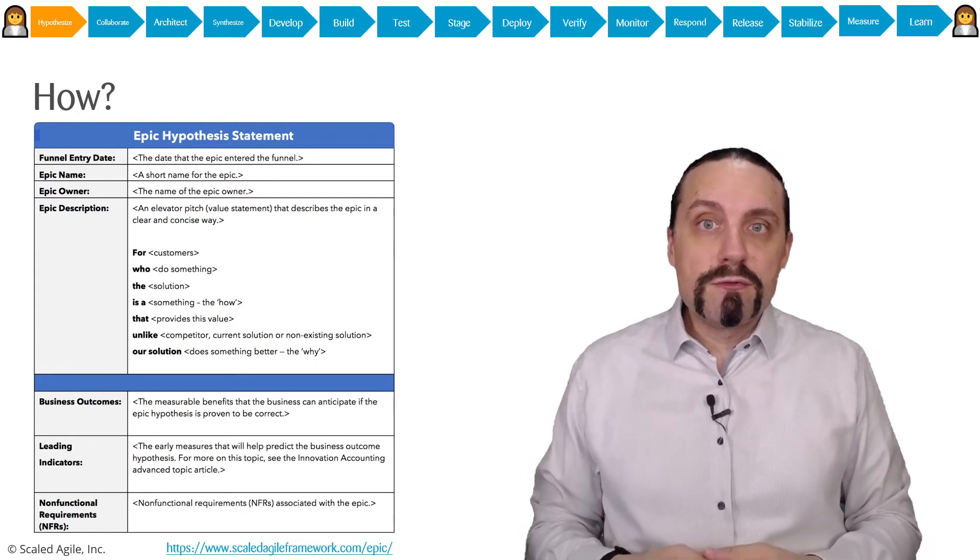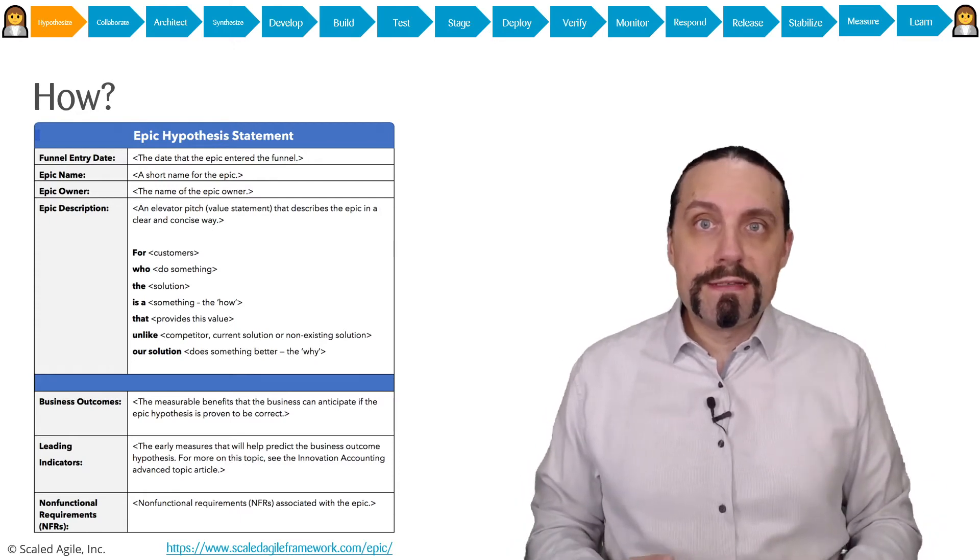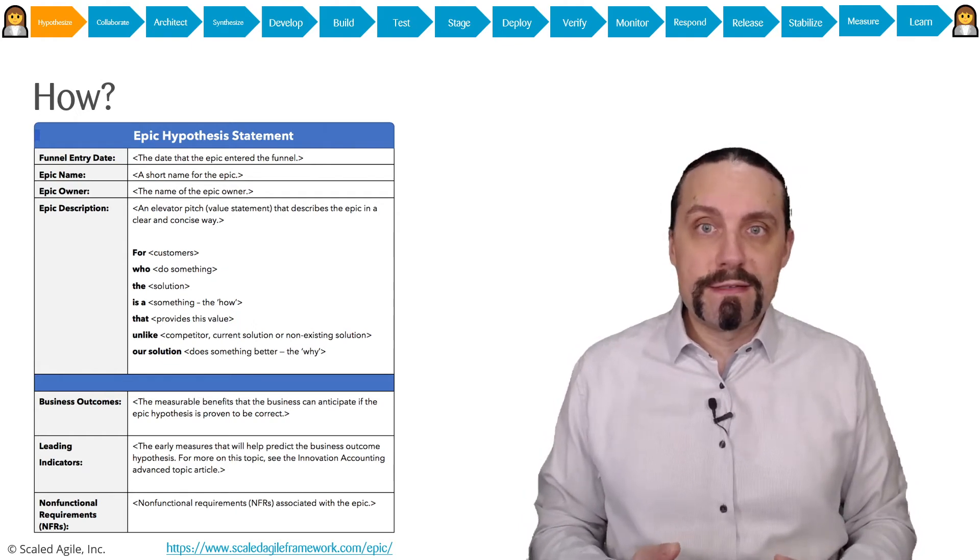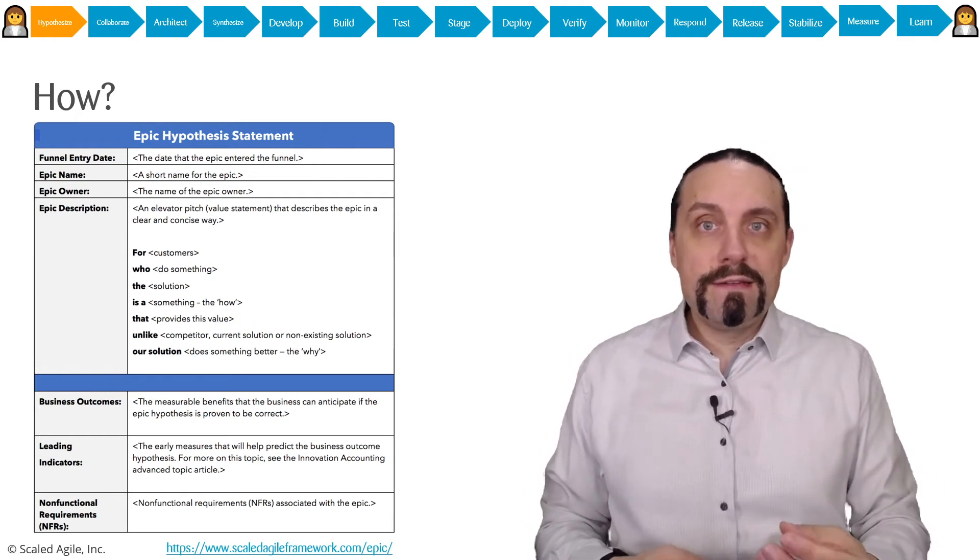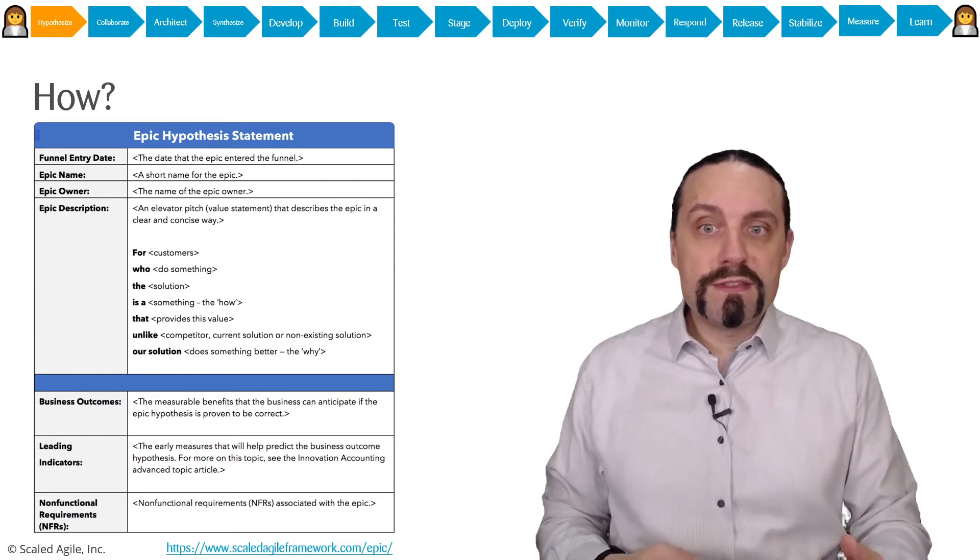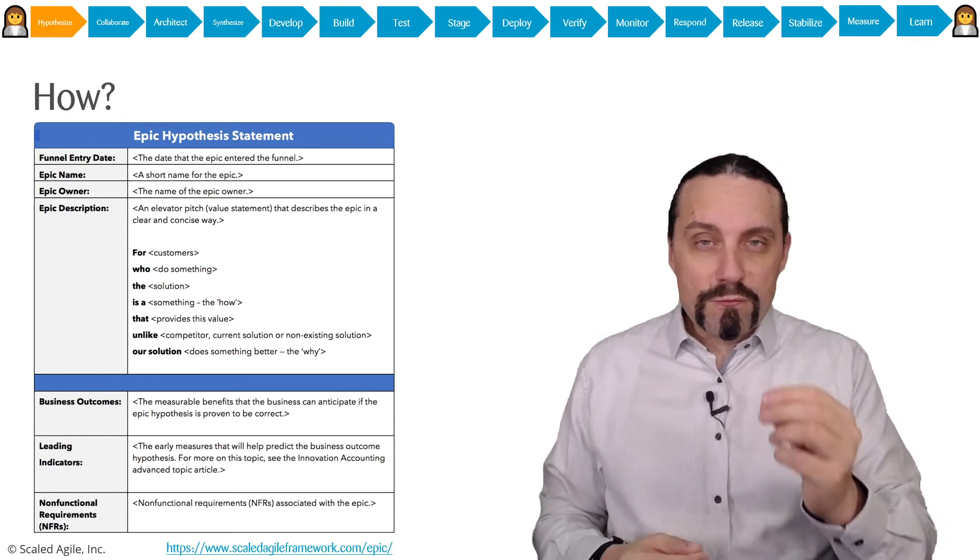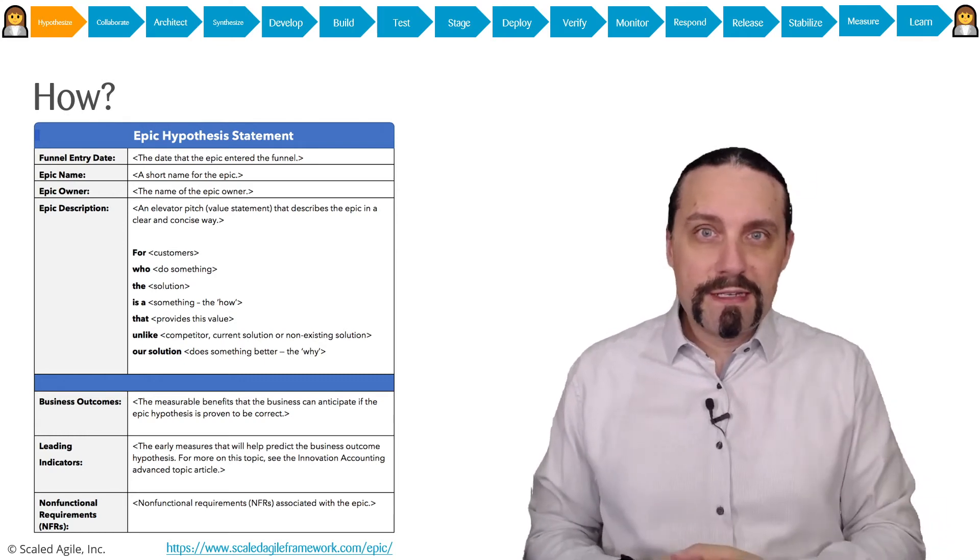And then we are going to define what the customer wants to do and what the solution is. And also unlike what our solution is. This is important to understand what the hypothesis is. And then we define the business outcome. So what do we really want to achieve with that.